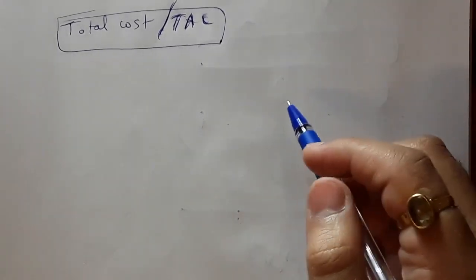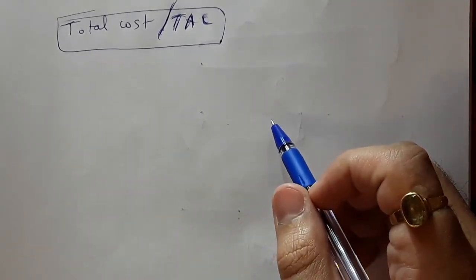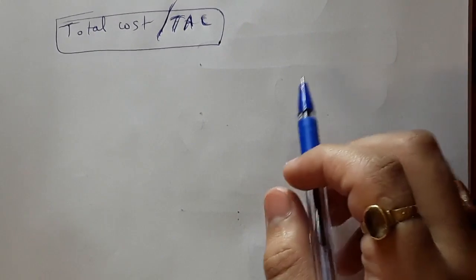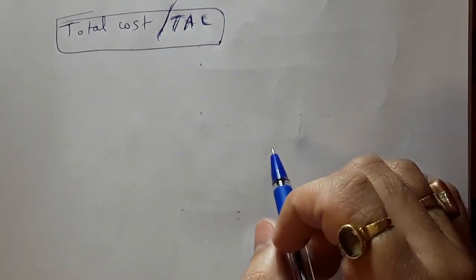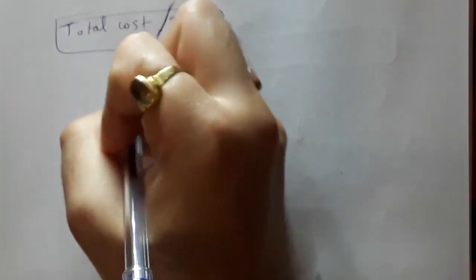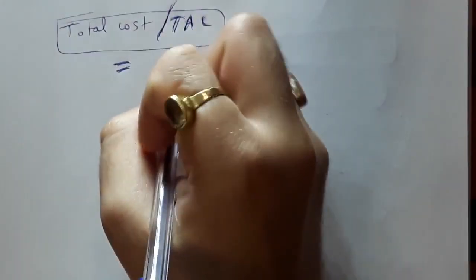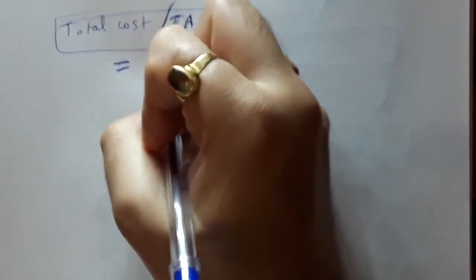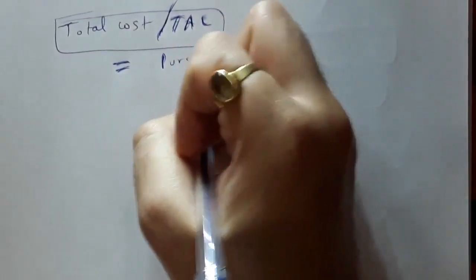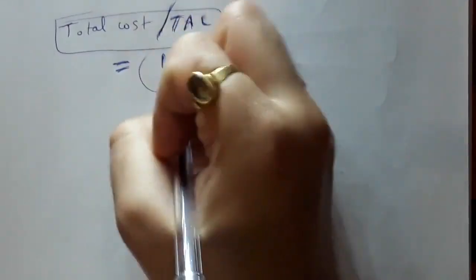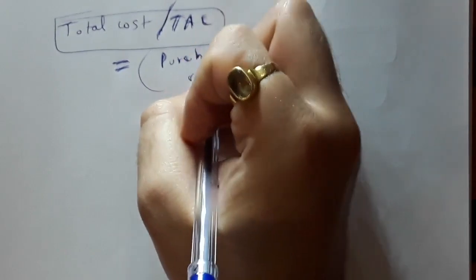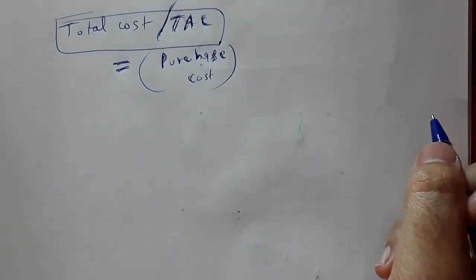Welcome back, my dear students to Target IES. Let's resume from where we left in the previous video. Our aim was to remove the total cost we will incur while keeping the inventory. First, we will purchase the inventory — so there will be a purchase cost. The cost we incur while purchasing the inventory is called the purchasing cost.